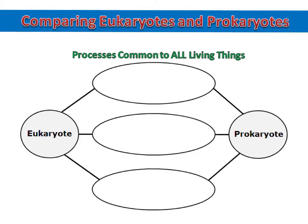There are some processes that are common to all living things — that means they happen in both eukaryotes and prokaryotes. The first is that they reproduce themselves. All living things need to be able to reproduce in order to keep their species alive. Eukaryotic cells reproduce through the process of mitosis, and prokaryotic cells reproduce through the process of binary fission.